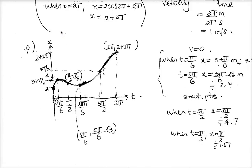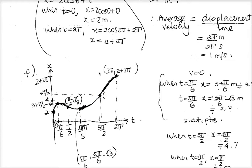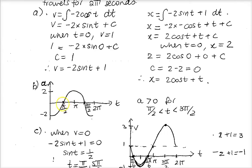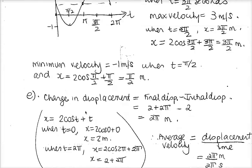Looking at the graph: from time 0 to time π/2, it's concave down. Then it's concave up from π/2 to 3π/2. Why? Because when you look at the acceleration graph, from π/2 to 3π/2 acceleration has positive values. And from 3π/2 to 2π, acceleration has negative values, so it would be concave down.